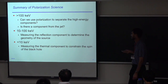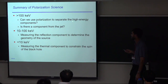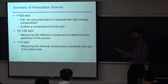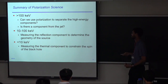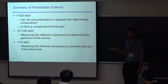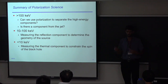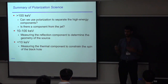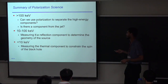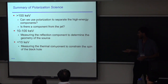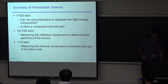To summarize the polarimetry science: above 100 keV, can we use polarization to separate high-energy components? Cygnus X-1 is the poster child — polarization measurements really do verify how we're decomposing the high-energy spectrum. From 10 to 100 keV, the PoGO Plus measurement of Cygnus X-1 looks at the reflection component, which constrains the geometry of the source — is it from a small region at the base of the jet or a more extended region? In soft X-rays with IXPE, we can measure the spin of the black hole.